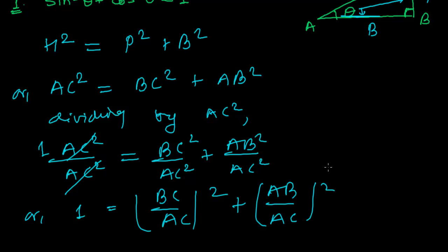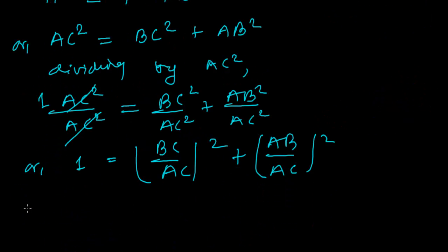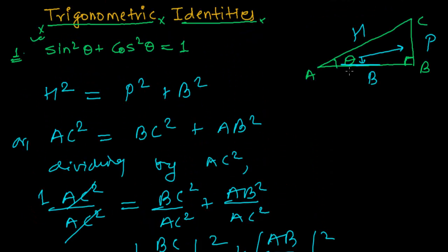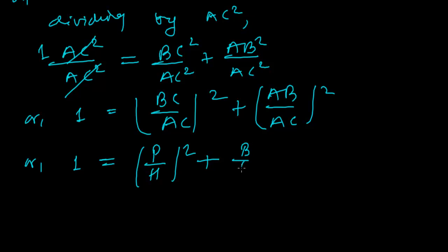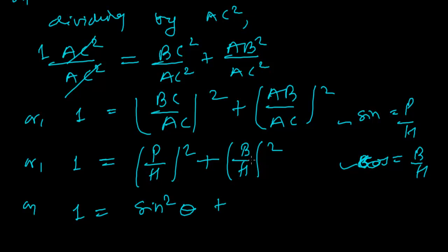This simplifies to 1 equals BC/AC all squared plus AB/AC all squared. Now, 1 equals P/H squared plus B/H squared. We know that sine theta is always perpendicular over hypotenuse, and cosine is always base over hypotenuse. So P/H is sine theta, and B/H is cosine theta. Therefore, 1 equals sine squared theta plus cosine squared theta.